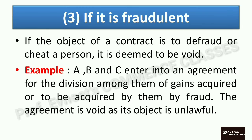Next: if it is fraudulent. If the object of an agreement or its consideration is fraudulent — meaning the purpose is to cheat or defraud someone — then the agreement is illegal and void. If the object of the contract is to defraud and cheat a person, it is deemed to be void. For example: A, B, and C entered into an agreement to divide equally the money they had earned by committing fraud on others — यह agreement void हो जाएगा, क्योंकि उनका मकसद ही unlawful है।